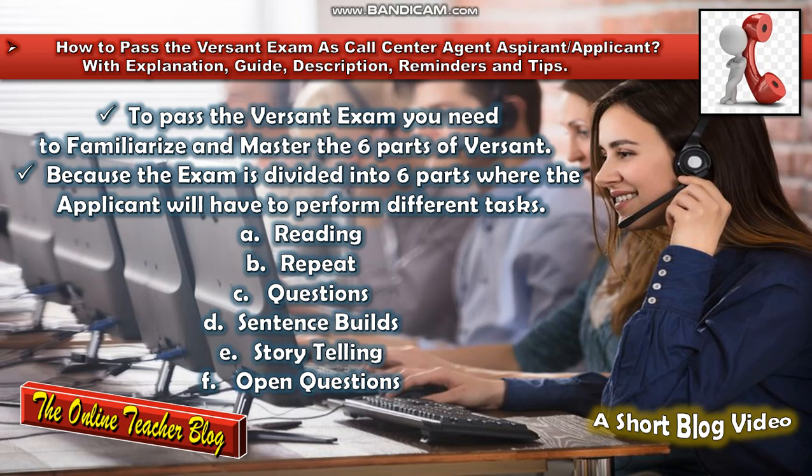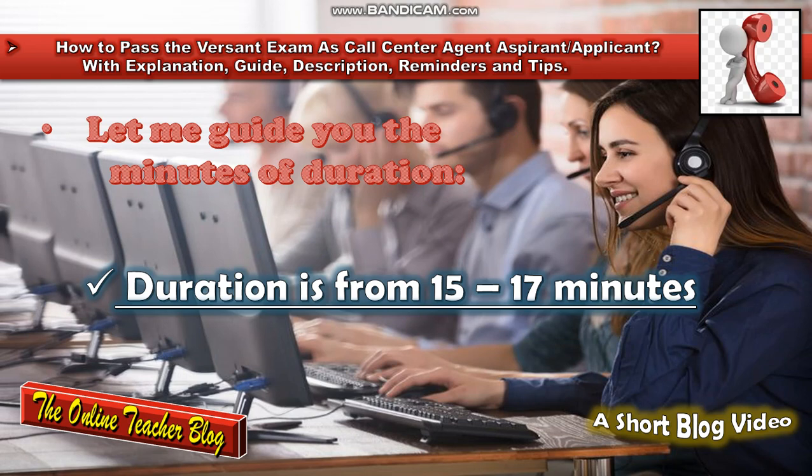To pass the Versant exam you need to familiarize and master the six parts, because the exam is divided into six parts where the applicant will have to perform different tasks: A) Reading, B) Repeat, C) Questions, D) Sentence Builds, E) Storytelling, and F) Open Questions. The duration is 15 to 17 minutes.